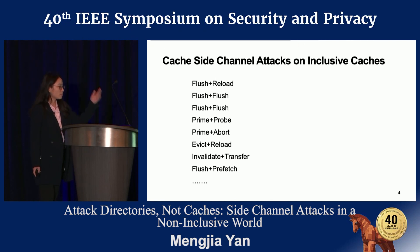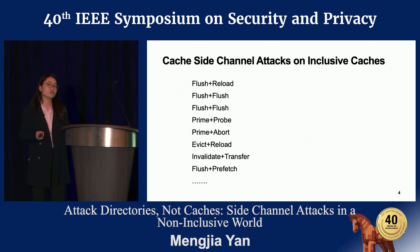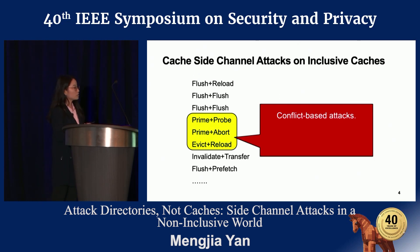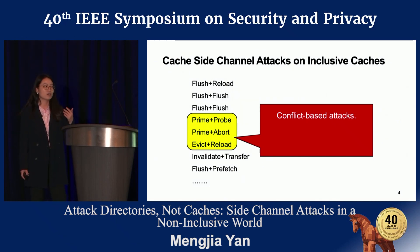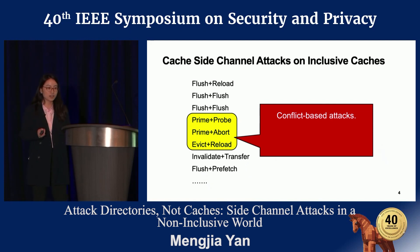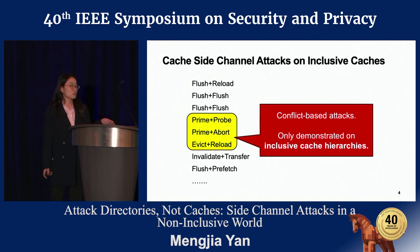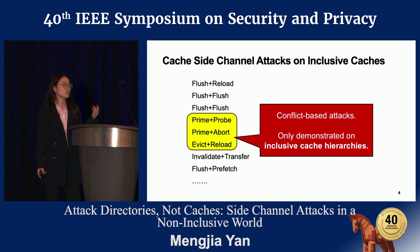We have many different attack techniques, most of them coming in an A+B format. I classify them into two categories: the first uses a special instruction called CLflush, and the other category — which I call conflict-based attacks — does not need CLflush. They use cache conflicts to perform the attack. These attacks are more stealthy and more difficult to defend against, and they have only been demonstrated on inclusive cache hierarchies, which was fine because all past Intel processors use inclusive cache.